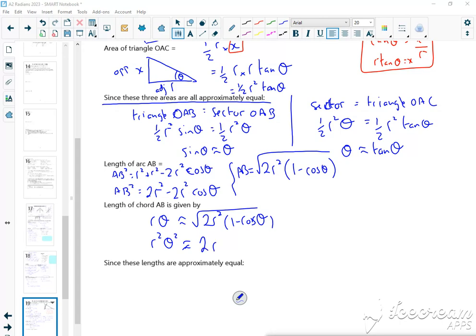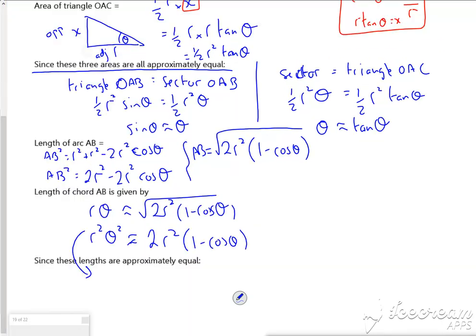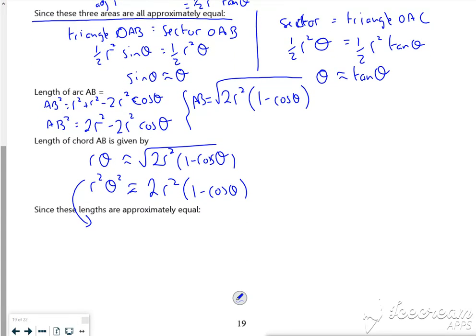So that's 2r squared times 1 minus cos theta. I guess really this should be down here, but it doesn't really matter. Right, so let's do some tidying up.